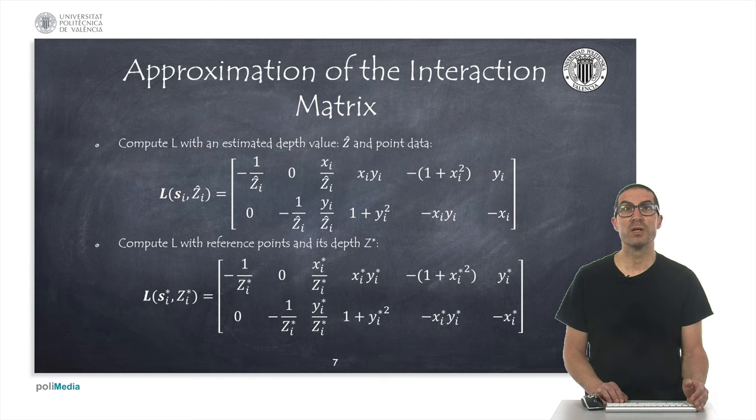As already mentioned, the interaction matrix depends on the point's depth. This value must be estimated, since a priori we don't know this value. In any case, two approximations are usually considered.